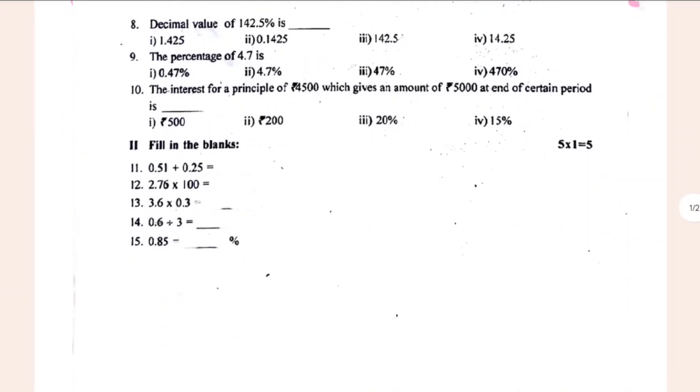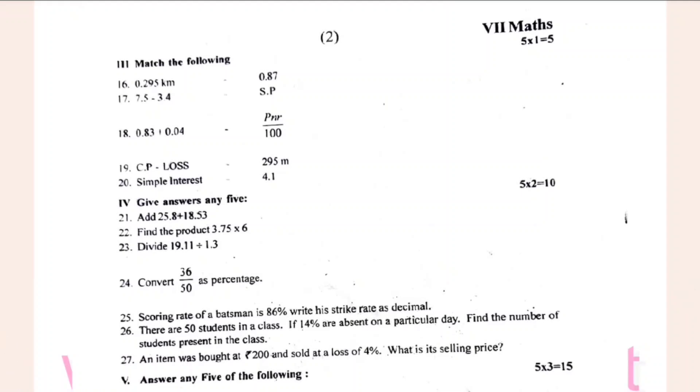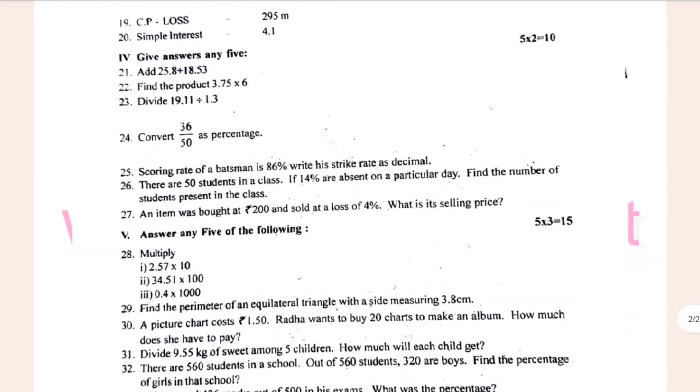500. So the answer is fill in the blanks. 0.51 plus 0.25 is equal to what is the answer? 0.76, 2.76 times 100, 3.6 times 0.6, 0.85, 0.295, 0.83, 0.04, 0.4, 0.5, 0.04, 0.75.